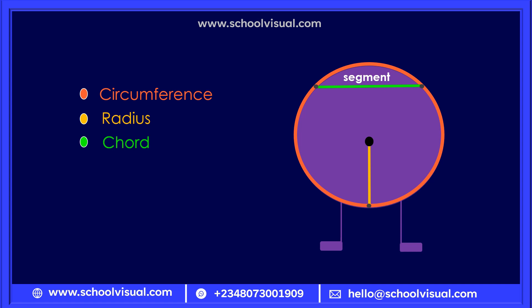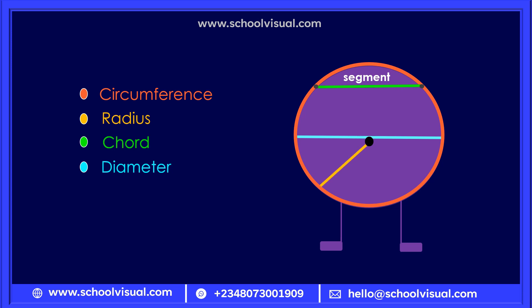A line that goes through the center of a circle — we call it diameter. That line that divides the circle into two equal parts, we call it diameter. Now if I have a radius and another radius, the space inside between the two radii is called a sector.